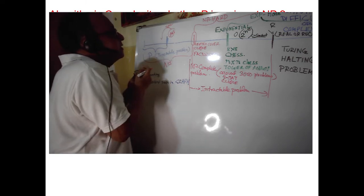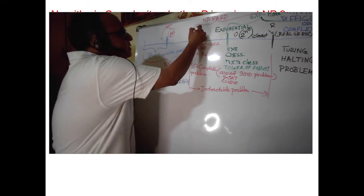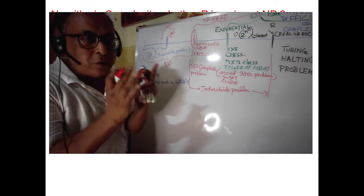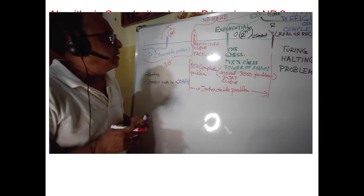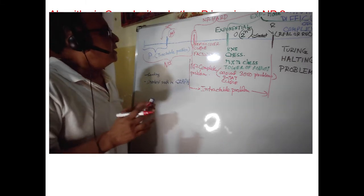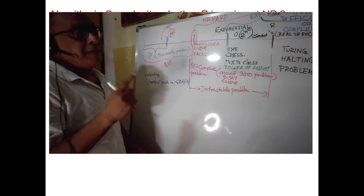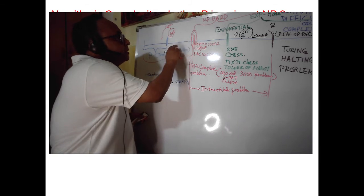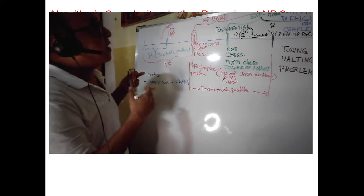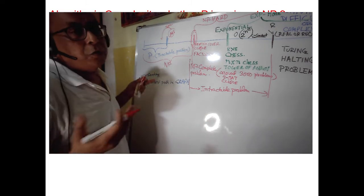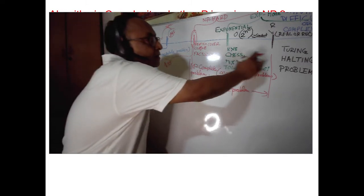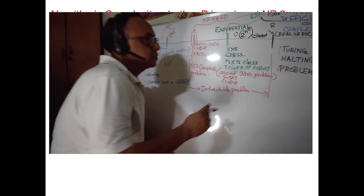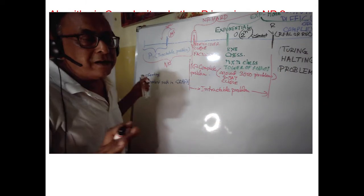There are lots of problems at the border point — the NP-complete region. Problems like the clique problem, the factoring problem, and the cover problem sit here. If one of these problems can be solved in polynomial time, the whole class can collapse into polynomial time. The Turing halting problem is at the rightmost end — everybody has decided it is unsolvable because there is no algorithm for it.